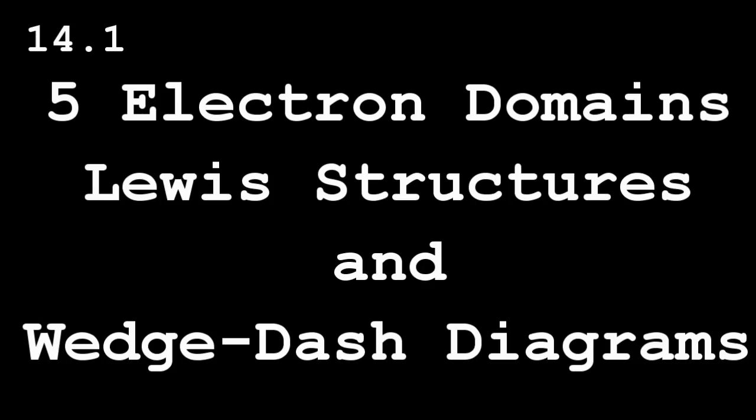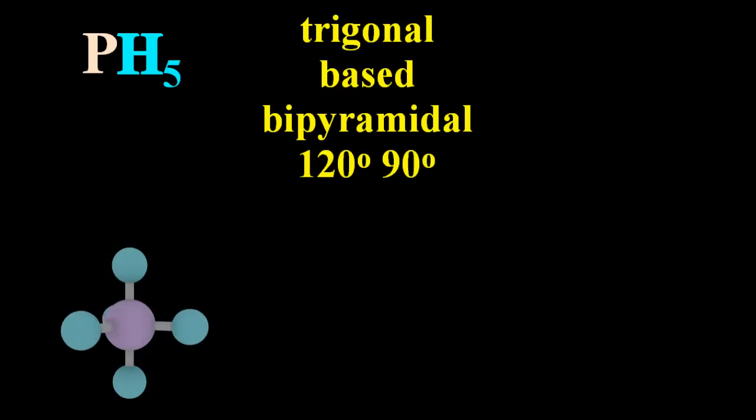Five electron domains, Lewis structures and wedge-dash diagrams. Well, phosphorus pentahydride is a trigonal-based bipyramidal molecule, and I've stuck on a couple of trigonal-based pyramids there. There they go.